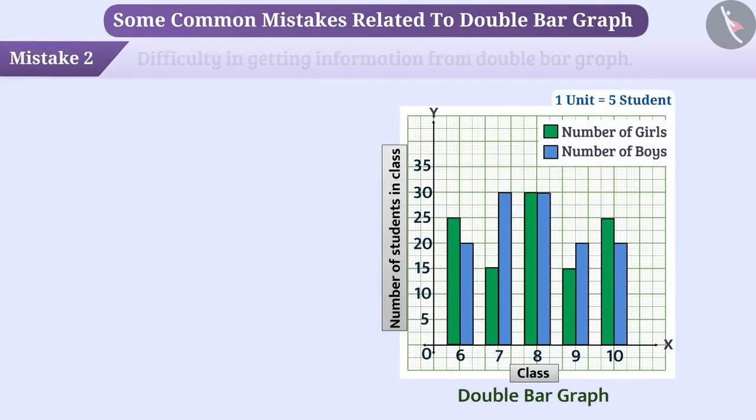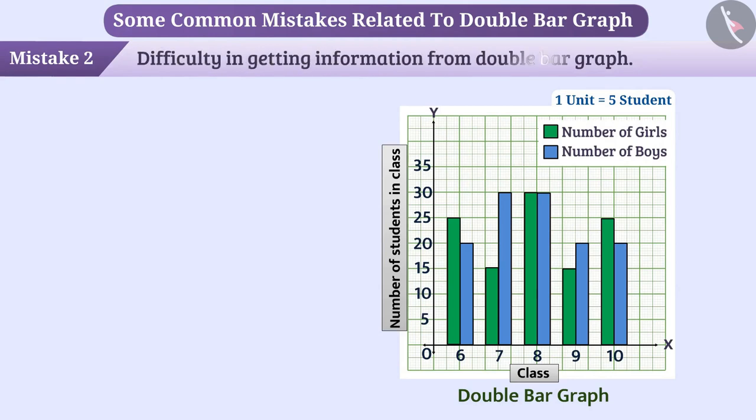Mistake 2. Difficulty in getting information from double bar graph. Some children have difficulty in finding out what is reported in double bar graph. For example, if they are asked what is shown in the double bar graph, then they fail to answer it.